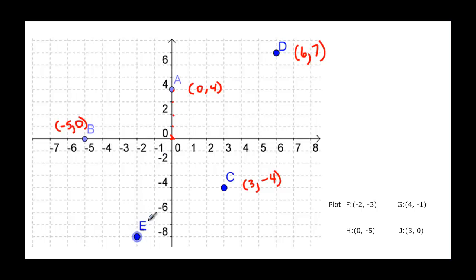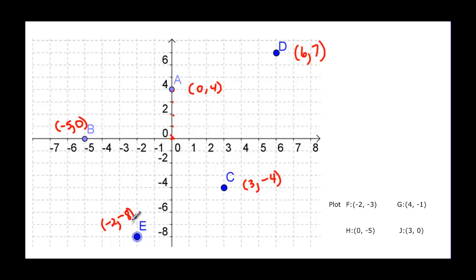For point E, we go over to negative two in the x direction, and then we go down eight units. We're straight across from negative eight, so that point is (-2, -8).